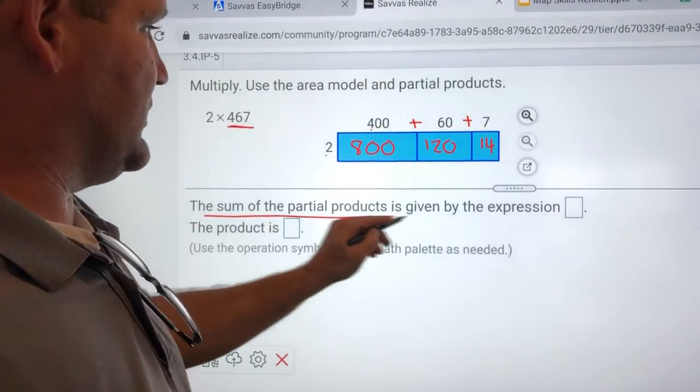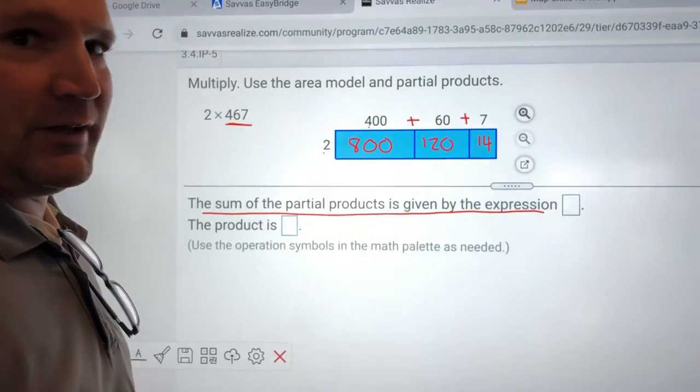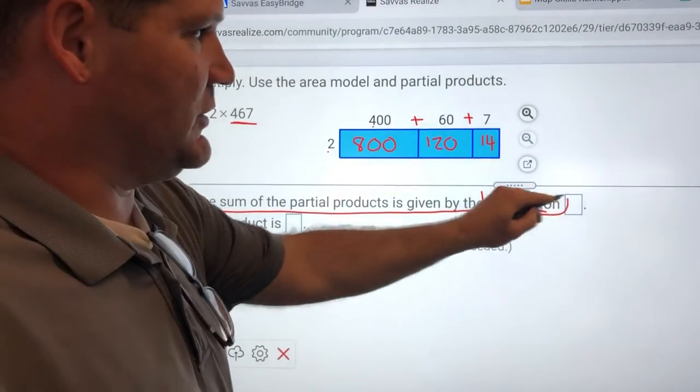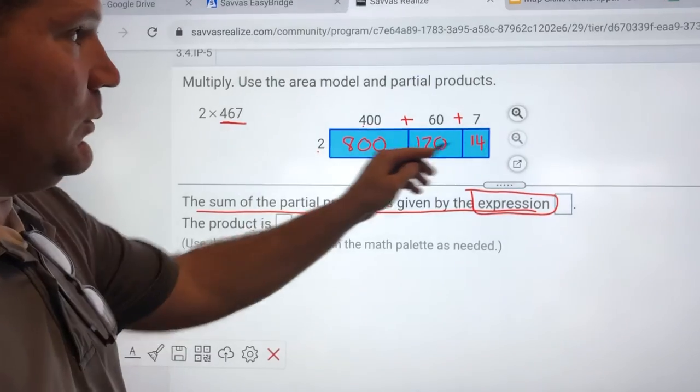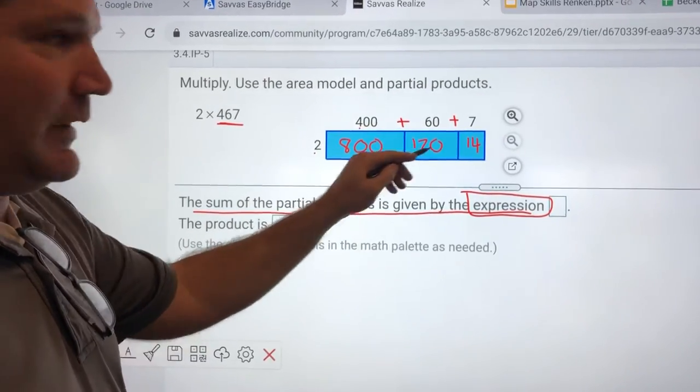So, down here where it says the sum of the partial products is given by the expression, remember, expression is just the math problem. Well, what's the math problem we're gonna do here to find the answer?